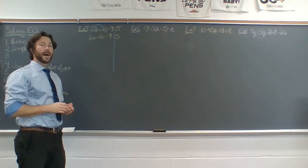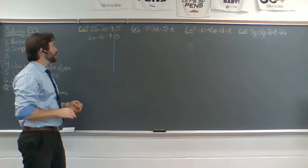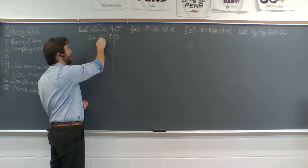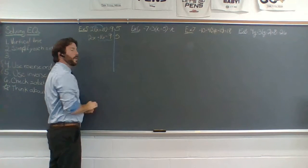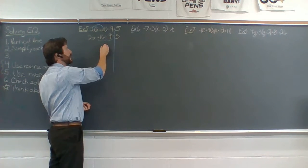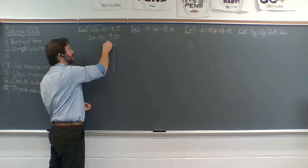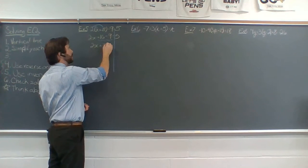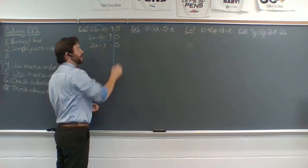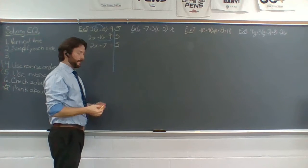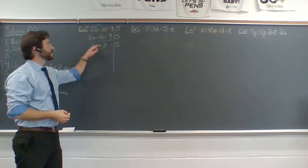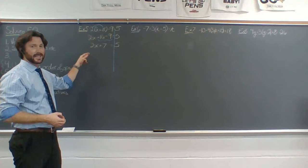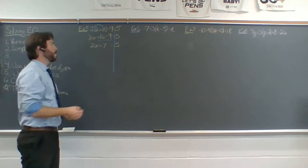Now I want to combine my like terms. My like terms here are this 16 and this minus 9. So I'll put those two together — 16 minus 9 is going to give me 7. So I've got 2x plus 7 still equals 5. Now I have that left side about as simplified as it can be. This looks like one of those equations from last time, so this is what we're going to solve.